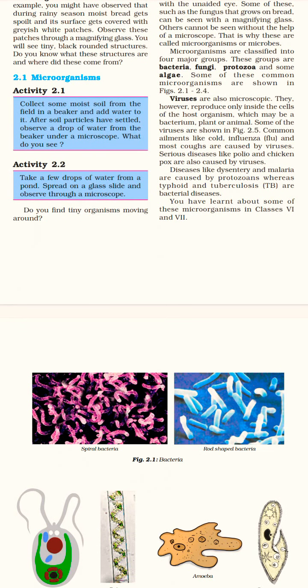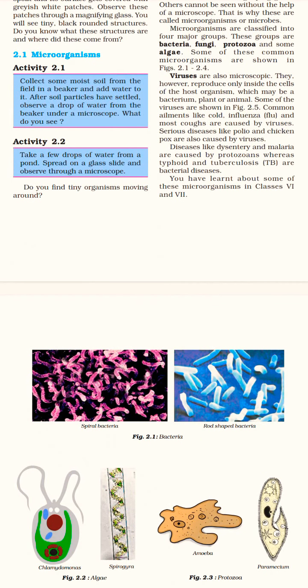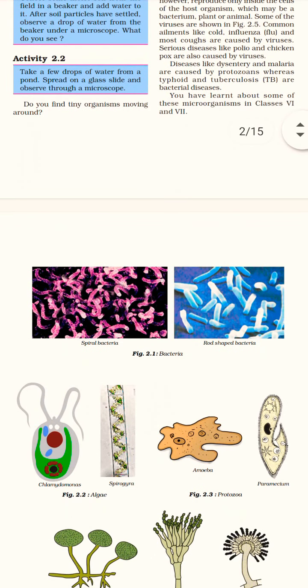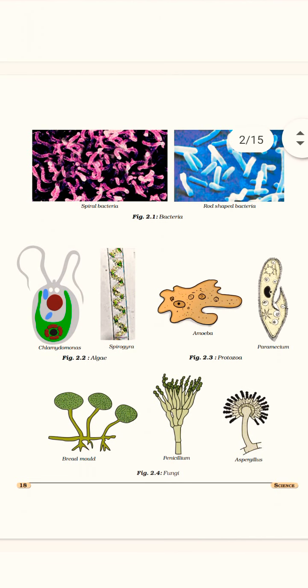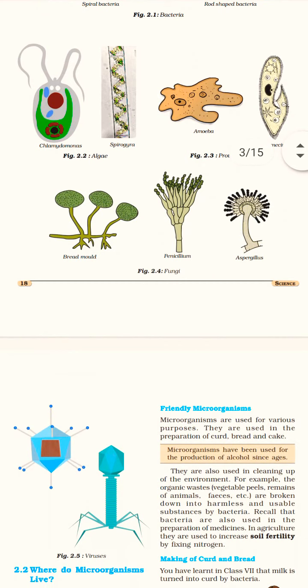Diseases like dysentery and malaria are caused by protozoans, whereas typhoid and tuberculosis are bacterial diseases. You have learned about some of these organisms in classes 6th and 7th, and figures of fungi were also shown.